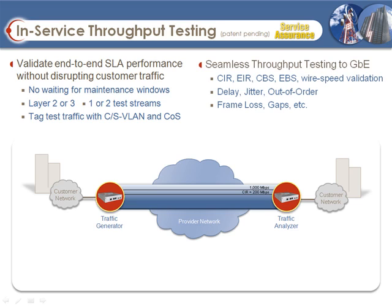This allows you to test whether or not the bandwidth committed to a customer in an SLA — for example, a committed information rate — is available even at peak usage hours when traffic is most busy or the network is most congested. This can be tested at either Layer 2 or Layer 3 and can support up to two streams concurrently over the customer traffic.